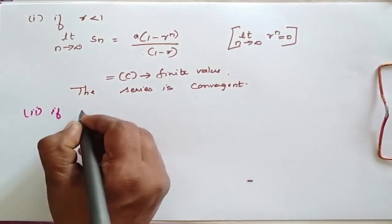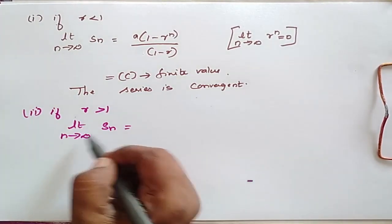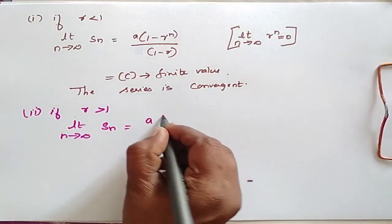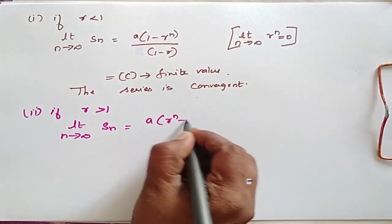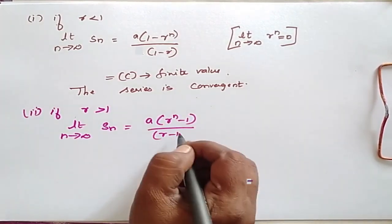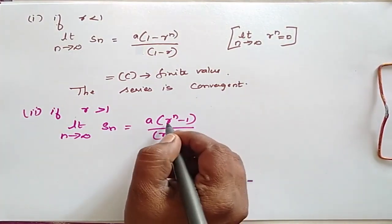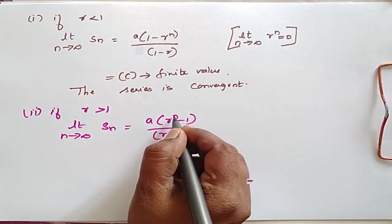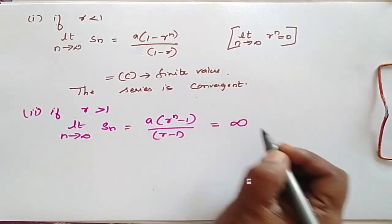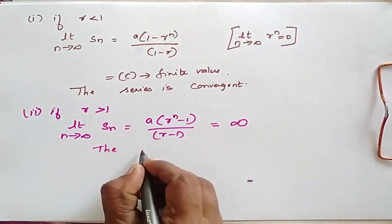If r is greater than 1, the limit as n tends to infinity of S_n equals a(r^n - 1)/(r - 1). When n tends to infinity, r^n tends to infinity, so the whole expression tends to infinity. Therefore the series is divergent.